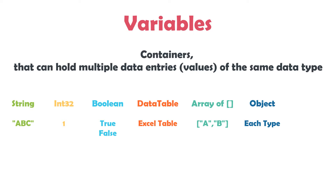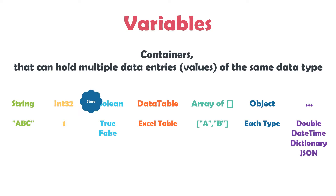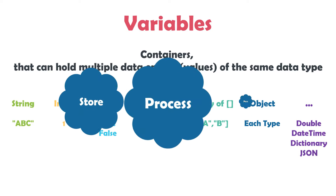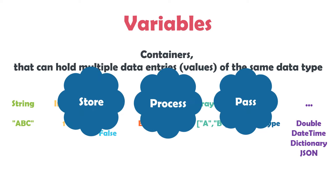These are the standard types in UiPath which we can see as default, but we have many other types which can be used for the process to store different data types — for example double, datetime, dictionary, JSON, etc. The main use of variables is to store, process, and pass the data from one activity to another.